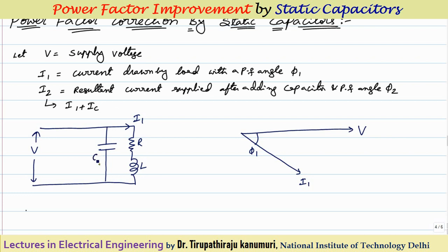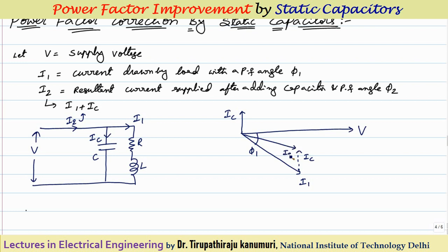In order to improve the power factor, I am connecting one capacitor across this load. When you connect a capacitor of value C across this load, the current drawn by the capacitor will be Ic. Without this capacitor, the current supplied by the source is I1. Because of this capacitor, the current supplied by the source becomes I2, which is the sum of I1 and Ic. The current Ic leads the voltage by 90 degrees. The resultant current I2 has a reduced power factor angle phi2, so by adding a capacitor, the power factor is improved.